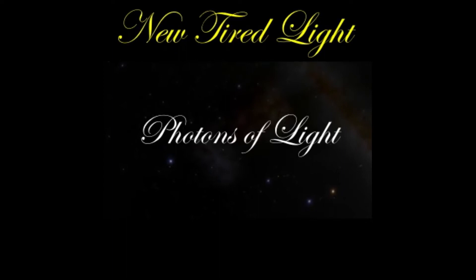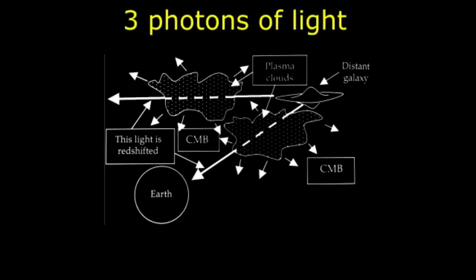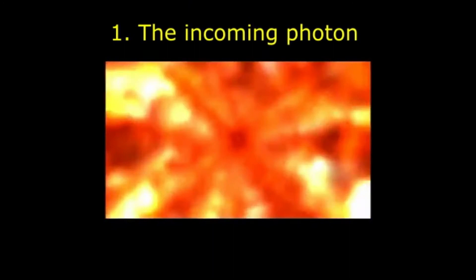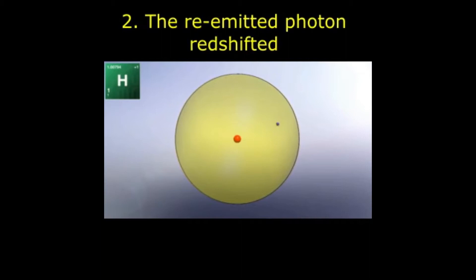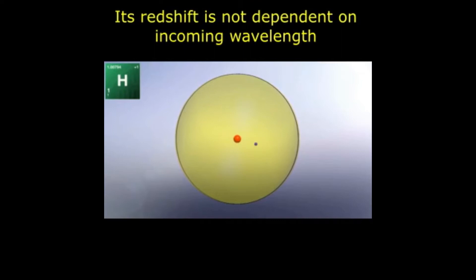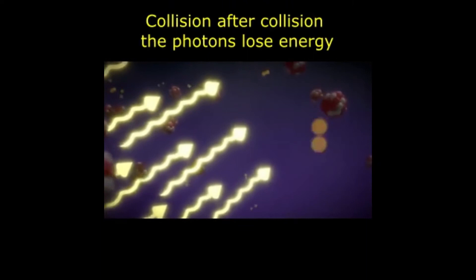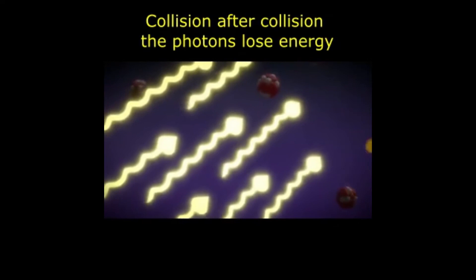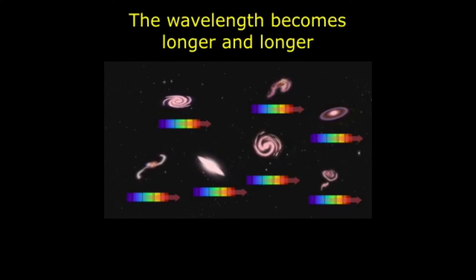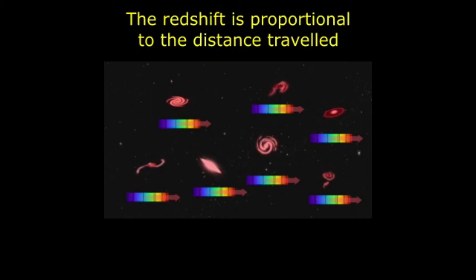In New Tired Light, we can distinguish three different photons in the collision process with an electron. The first is the incoming photon. The second is the same photon re-emitted but redshifted — the redshift of the re-emitted photon is independent of the wavelength of the incoming photon, as the increase in wavelength is the same. Collision after collision with electrons through the plasma of space, the photons lose energy every time, and the wavelength becomes longer and longer — the shift in wavelength is proportional to the distance traveled. The third is a secondary photon emitted by the recoiling electron, which forms the cosmic background radiation.